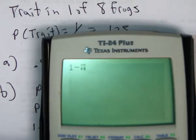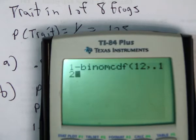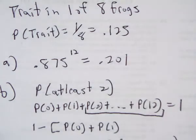Hold on. One minus binomCDF, twelve, comma, 0.125, comma, one. And if we do that out, we get that's it. About 0.43.